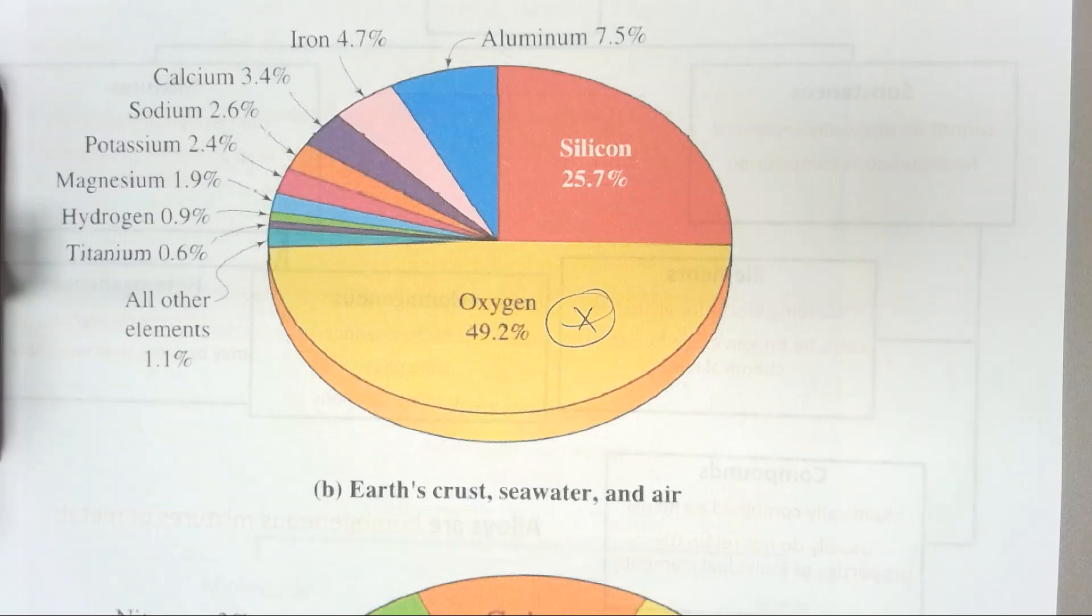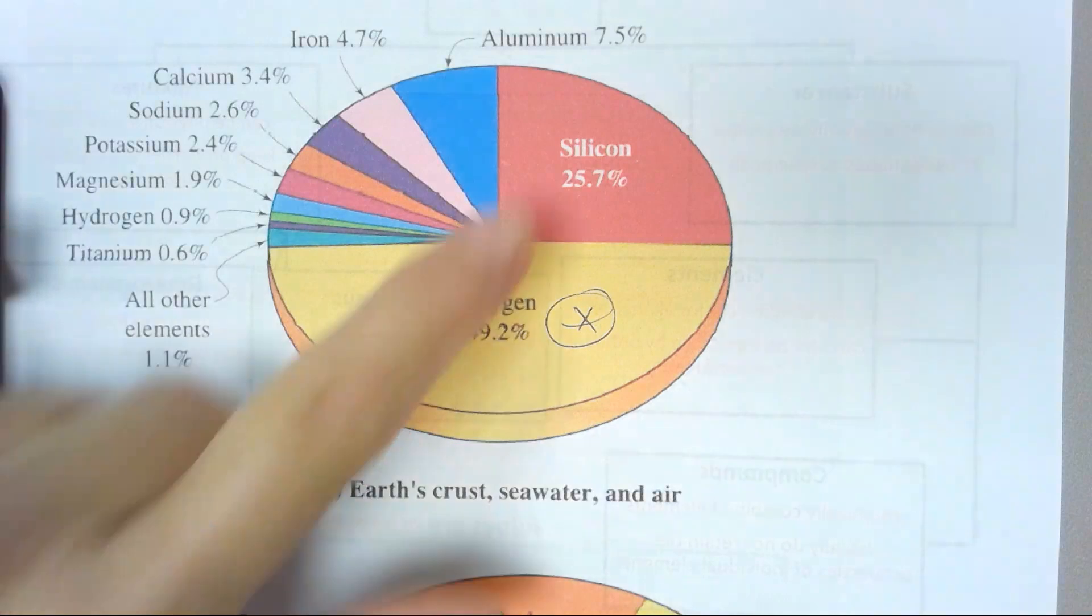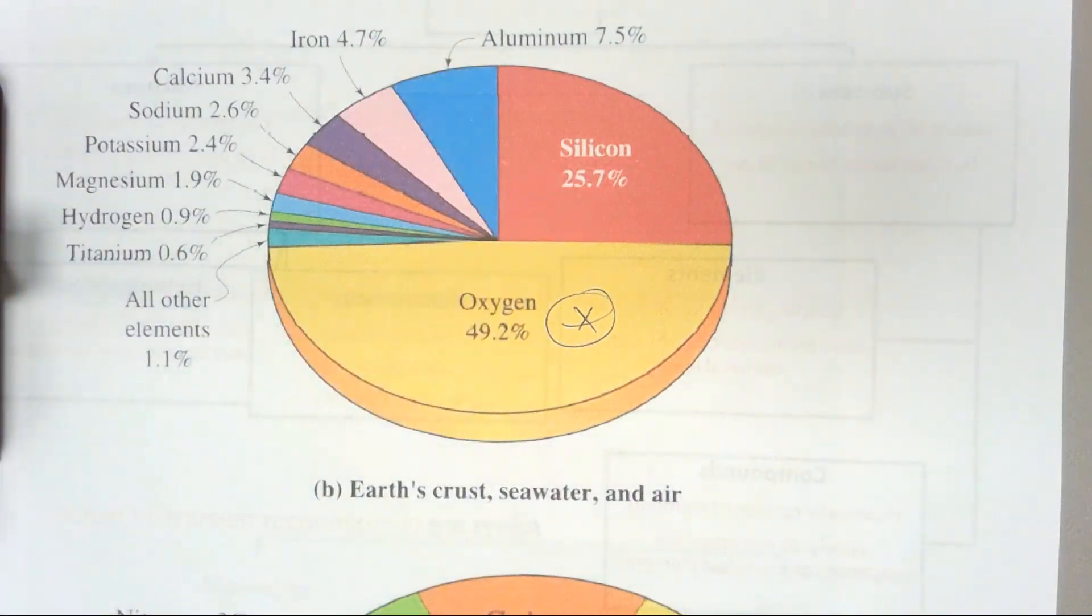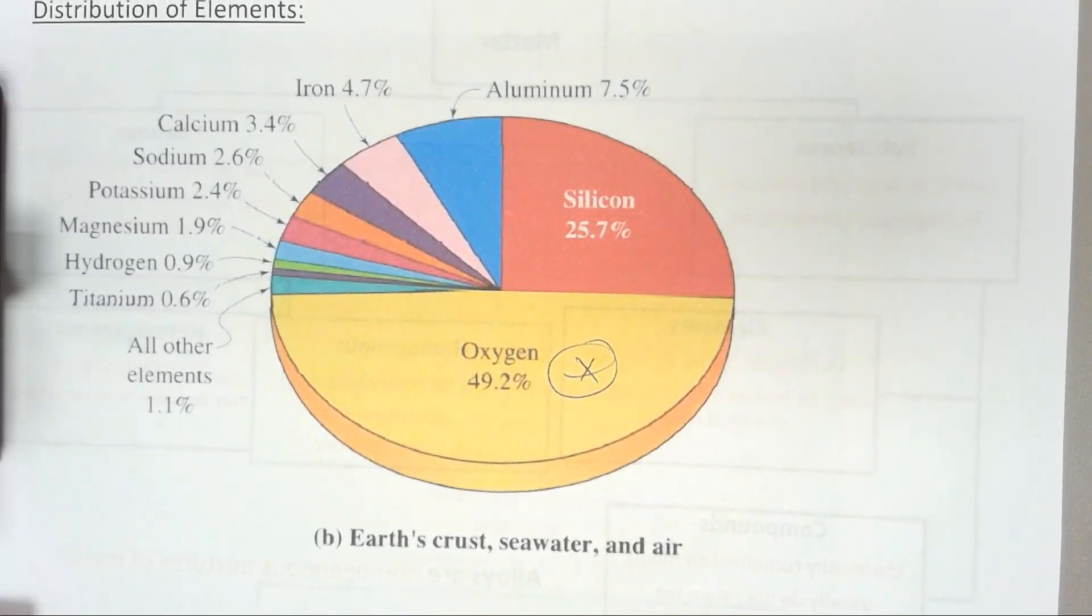Now, another interesting thing for my ag majors and soil science people is the silicon. Over a quarter of the Earth's crust, seawater, and air is silicon. Where is that? Yes, you're right. It's the sand. You have a lot of silicon in the soil. Different soils are different, but silicon is one of the main ingredients of sand.